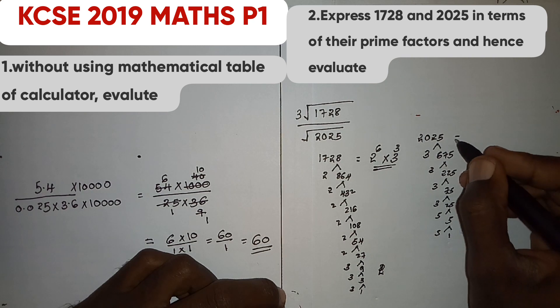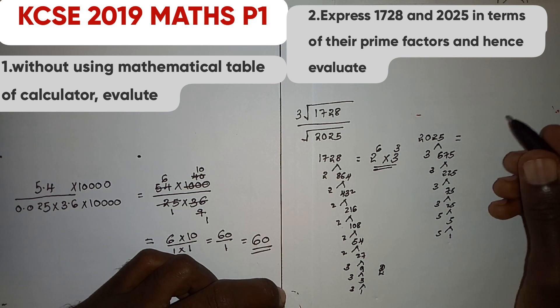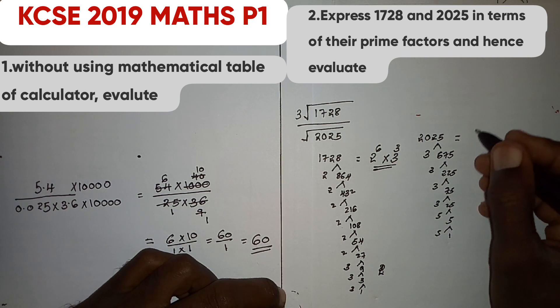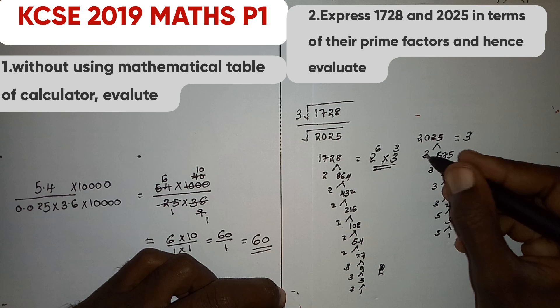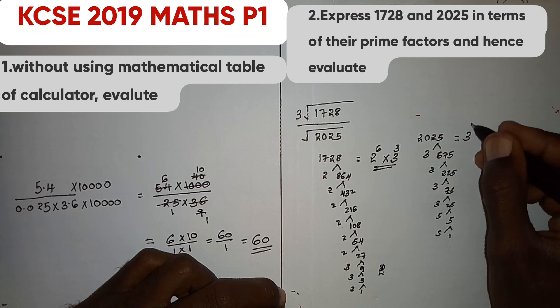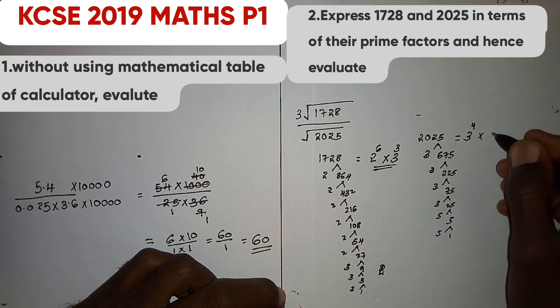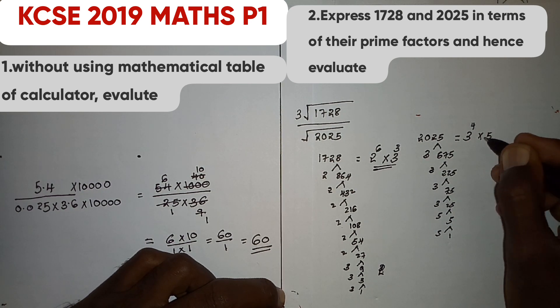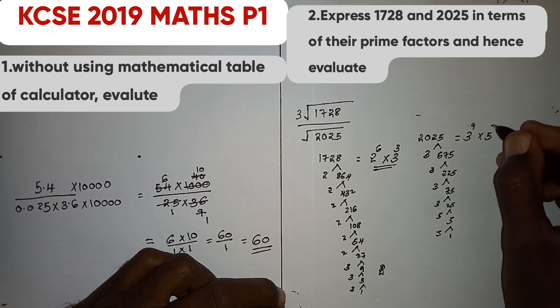Therefore, the prime factors of 2025 are 3 to the power 4 multiplied by 5 to the power 2.